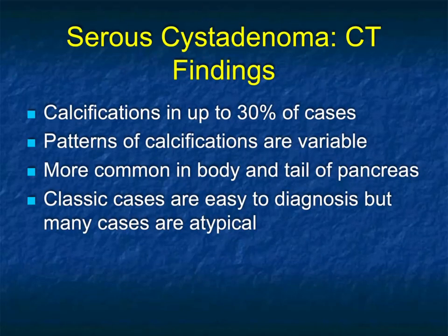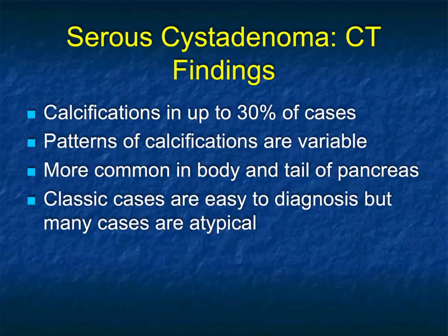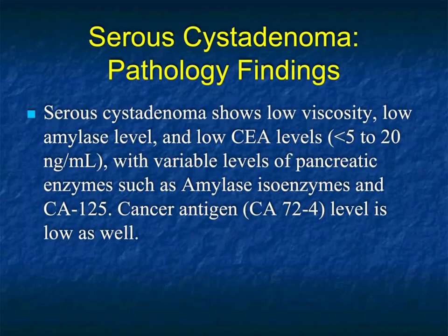On CT, calcifications occur in up to 30% of cases. The classic is central stellate calcification, but the more cases you see, the more you find a range - from multiple spotty calcifications throughout the gland to calcifications in the periphery. The calcification pattern is generally very variable. Serous cystadenomas are more common in the body and tail, but we still see them in the head of the pancreas. Classic lesions are easy to diagnose, but many cases are just not classic.